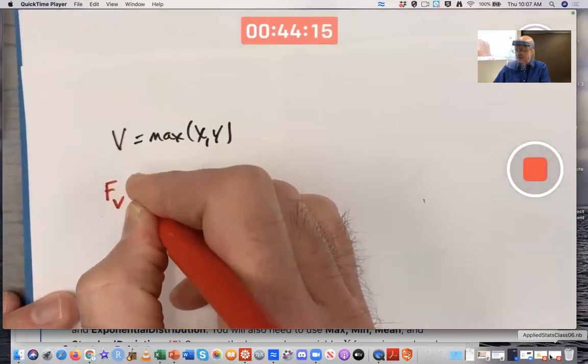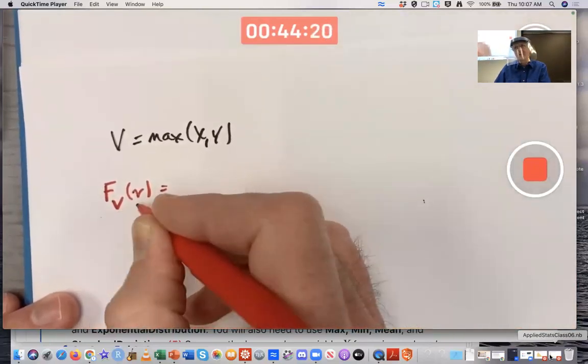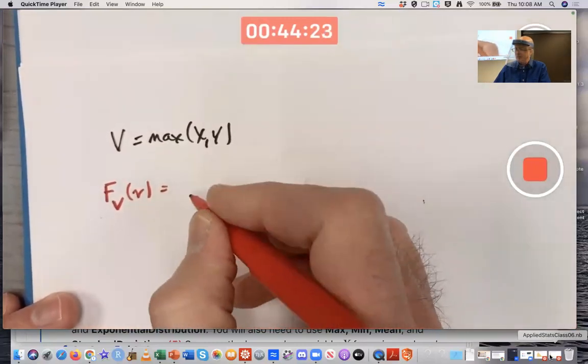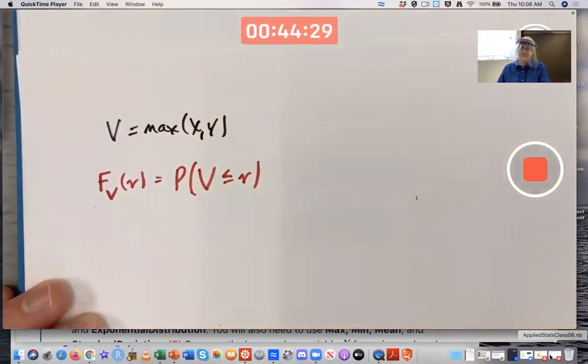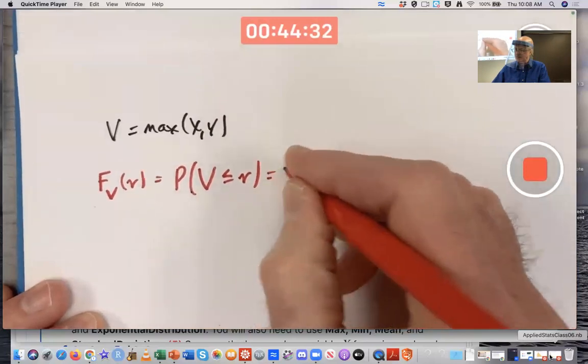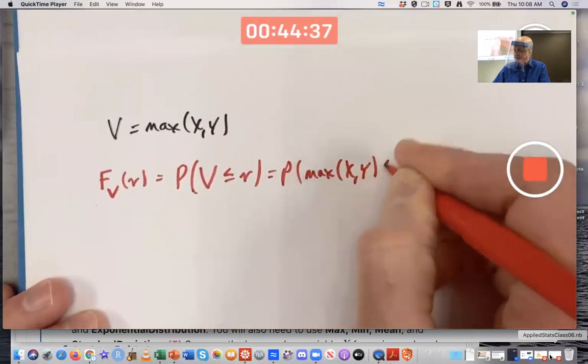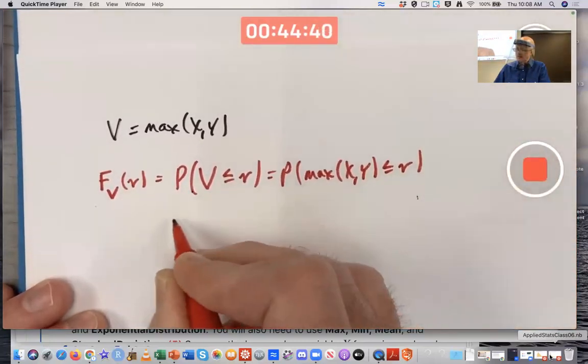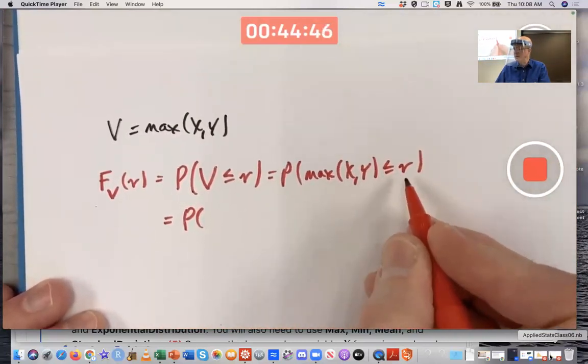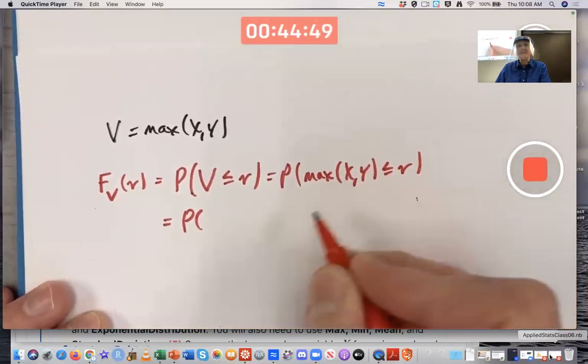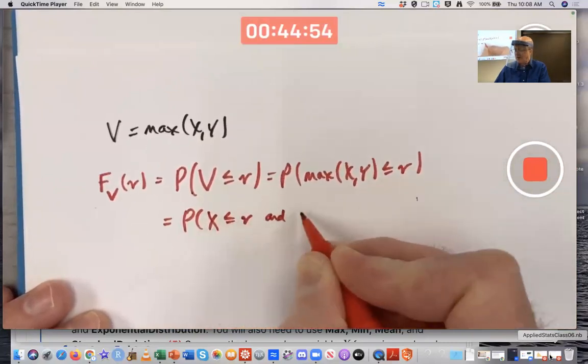Capital F sub capital V of little V - always matching those variables, make one a capital letter and make one a lowercase letter. It's the probability that capital V is less than or equal to little V, which is the probability that the maximum of X and Y is less than or equal to little V. Which means if the maximum of two numbers is less than or equal to some other number, then both of them have to be. X is less than or equal to little V and Y is less than or equal to little V.